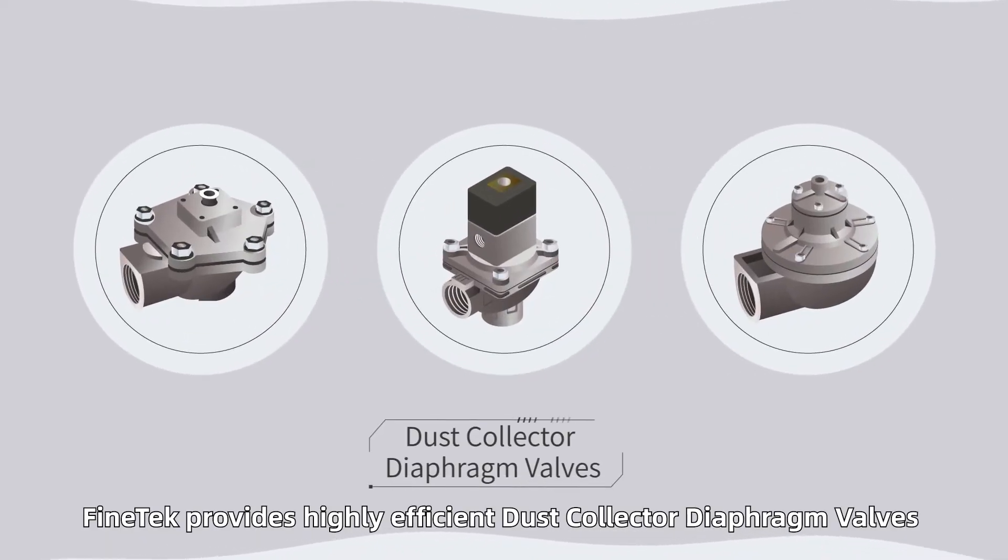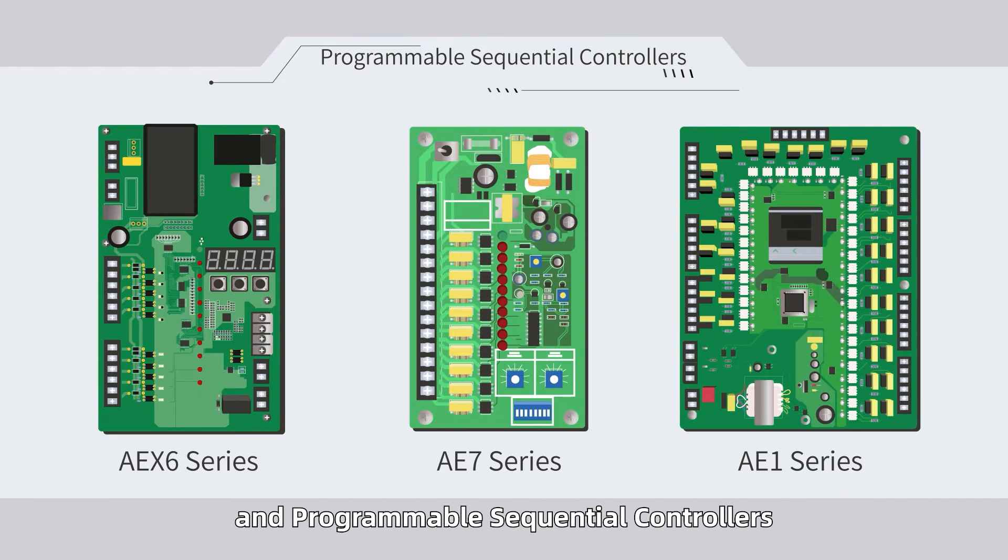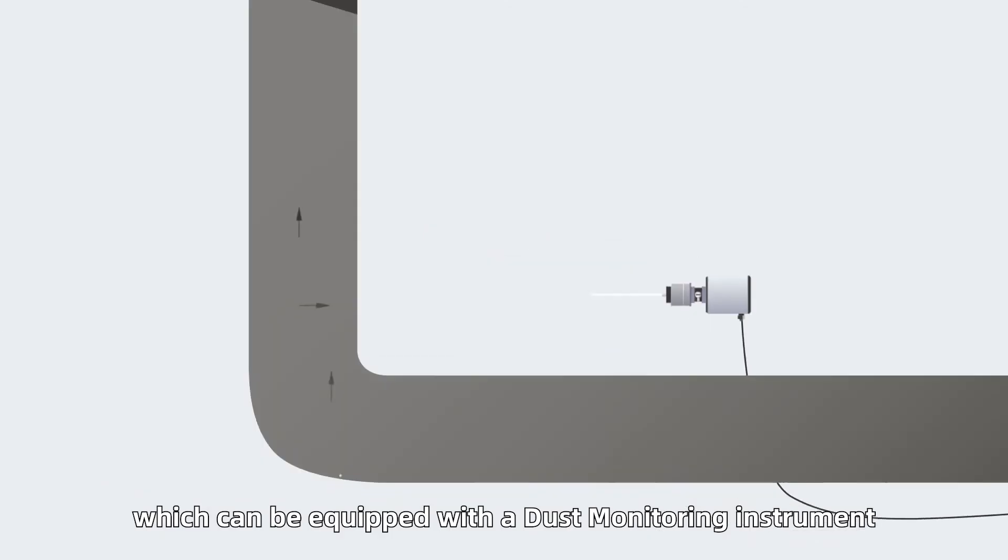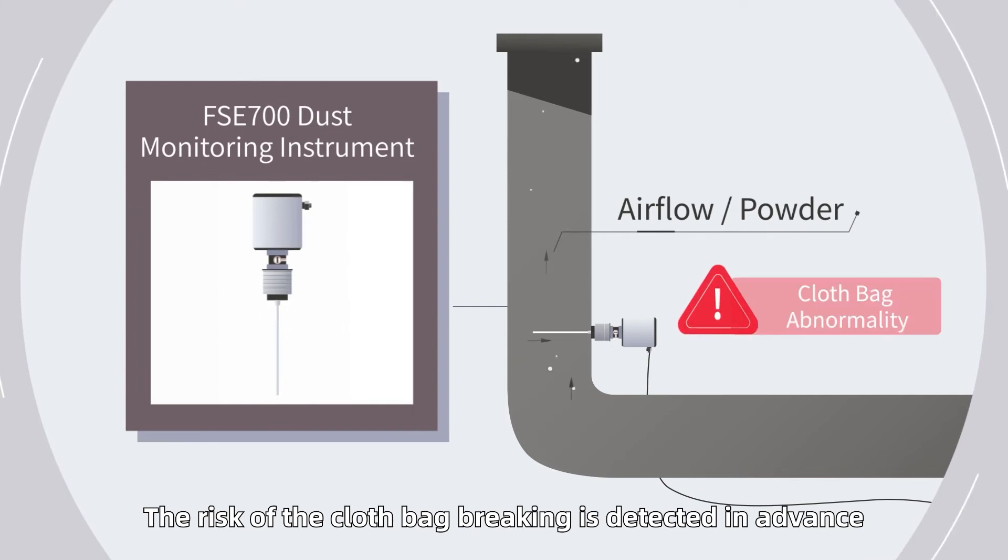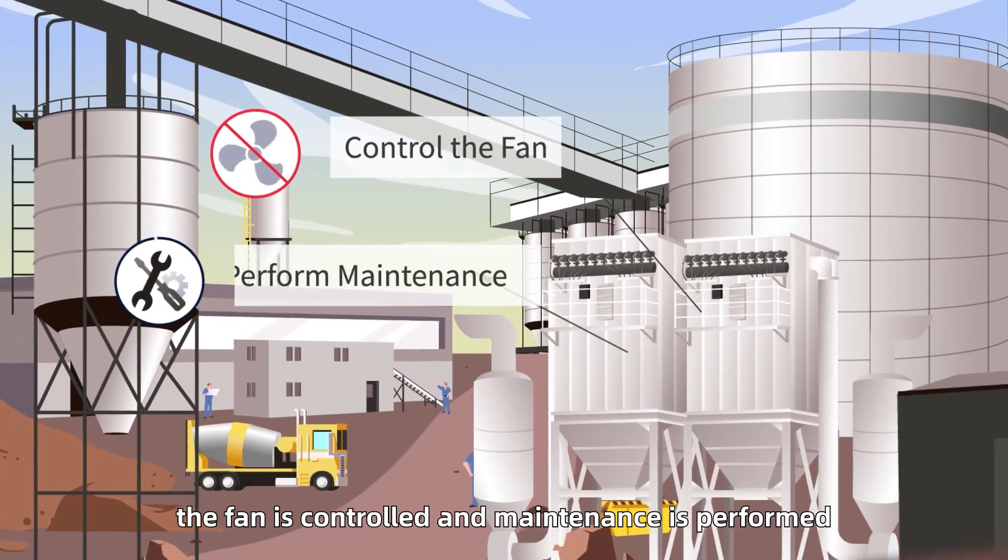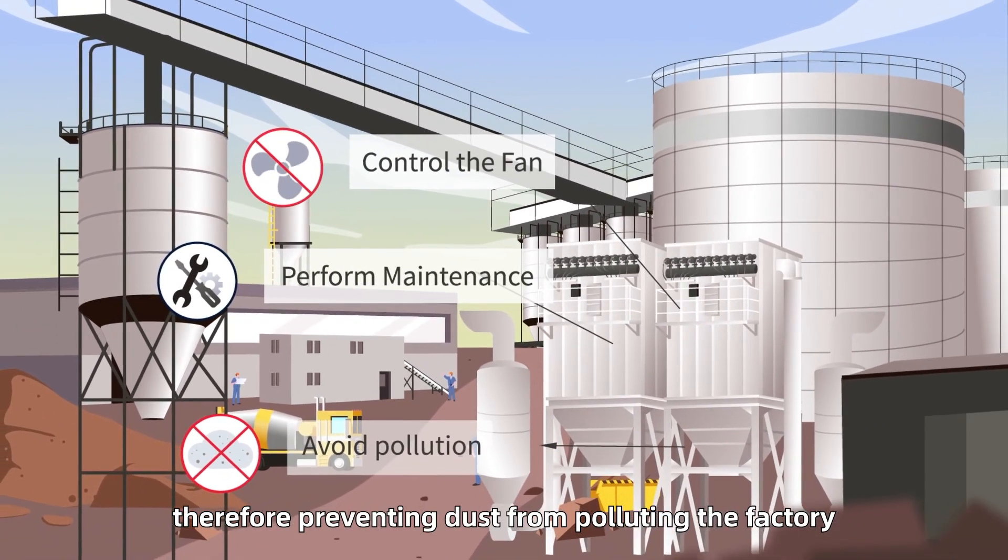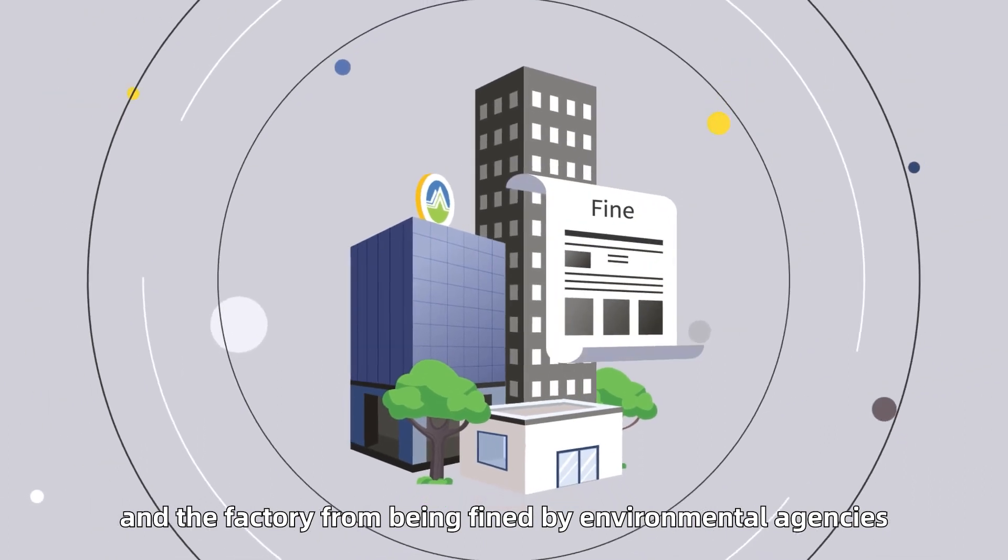FinTech provides highly efficient dust collector diaphragm valves and programmable sequential controllers, which can be equipped with a dust monitoring instrument. The risk of the cloth bag breaking is detected in advance. The fan is controlled and maintenance is performed, therefore preventing dust from polluting the factory and the factory from being fined by environmental agencies.